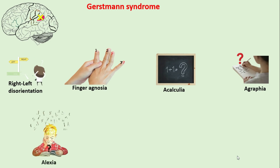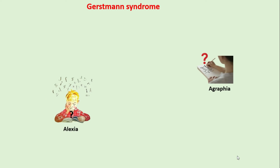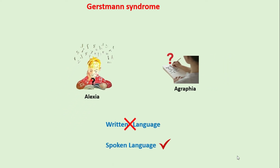There is also difficulty in reading, known as alexia. This alexia with agraphia leads to loss of ability to comprehend written language, but spoken language may still be understood.